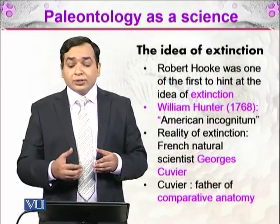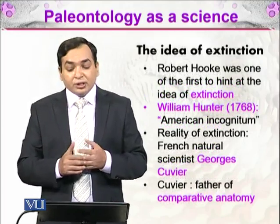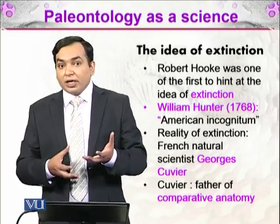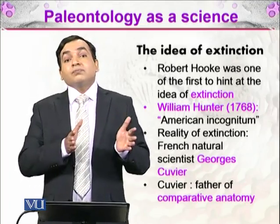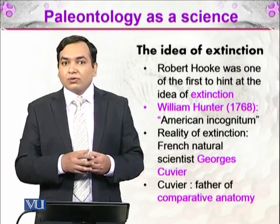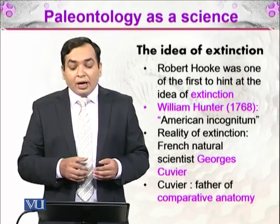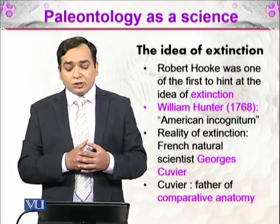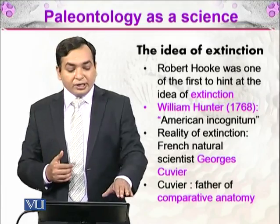Next came the idea of extinction. William Hunter identified the American incognitum — fossils that no one could identify — as extinct organisms. Robert Hooke was also among the first scientists to propose the idea of extinction. French natural scientist Georges Cuvier, known for comparative anatomy, compared the anatomy of fossils with that of modern living organisms to establish this concept further.